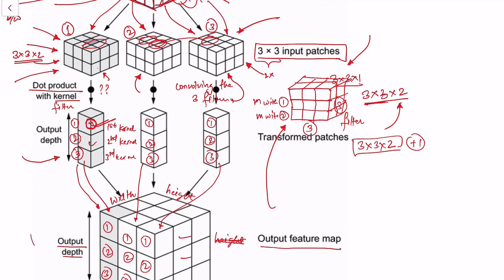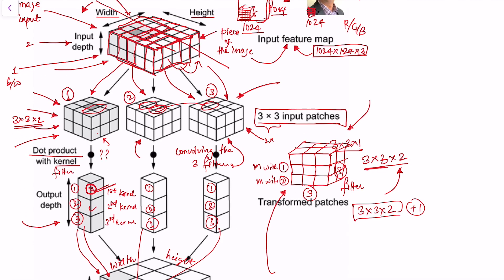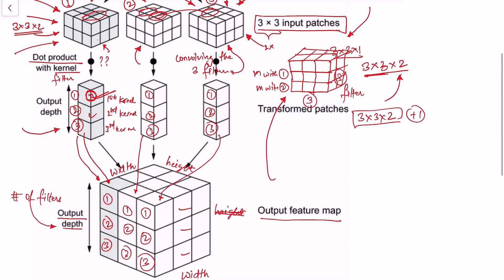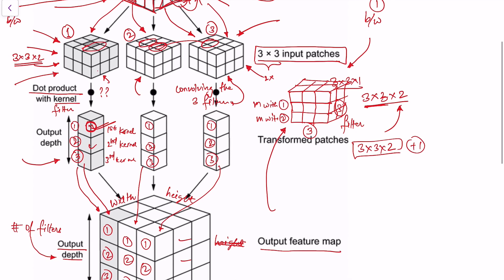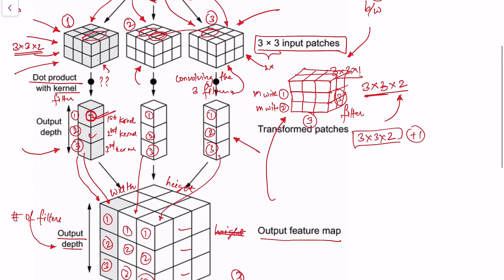The output depth — that is, the number of channels in the output feature map — is decided by the number of kernels or filters. In this case, since we had 3 kernels, we got output depth 3. A common confusion is that the number of input channels has no relationship to how many channels the output feature map will have. The depth of the output feature map is completely defined by how many filters you use. If we only had 1 filter, the output depth would be 1.